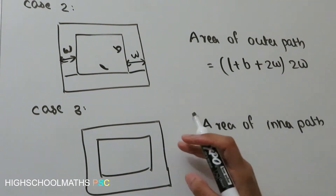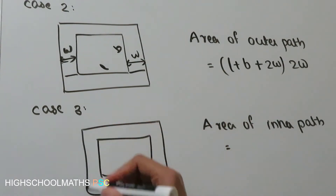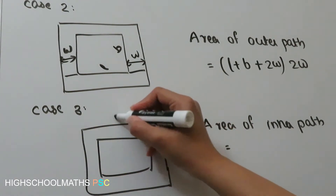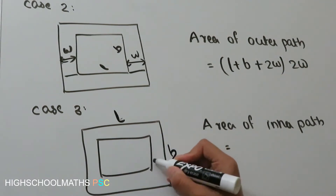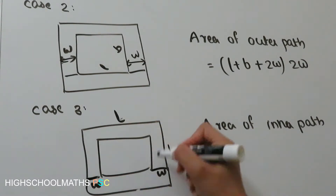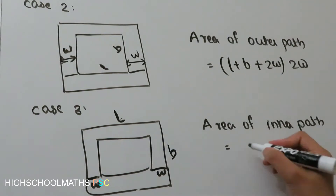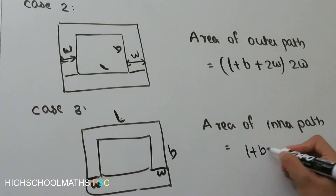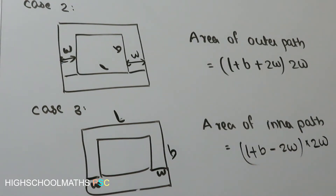In case 3, it is the area of the inner path. If you plot this length, it is the length of the inner path — W into the inner path. The formula is L plus B minus 2W, into 2W.